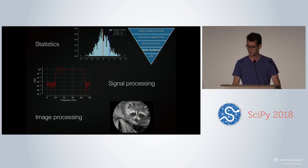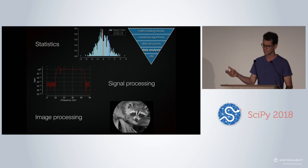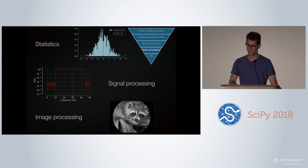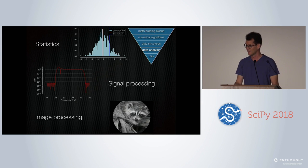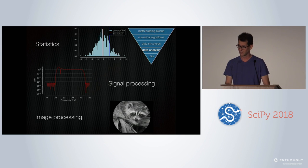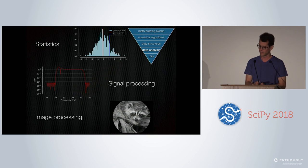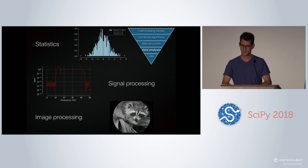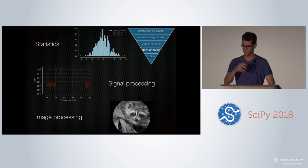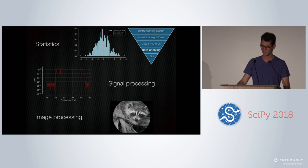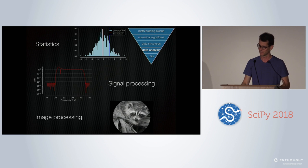Then you've got signal processing. If you work with audio signals and want to filter them, that's when you go to SciPy.signal. And last, image processing. The basics are in SciPy — filtering, edge detection — and then scikit-image builds on top of SciPy as well with more and fancier stuff available.